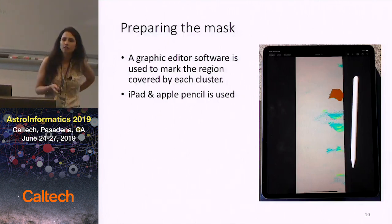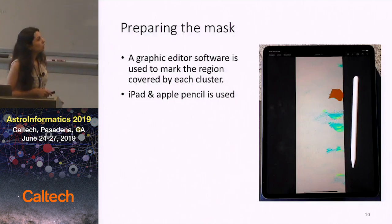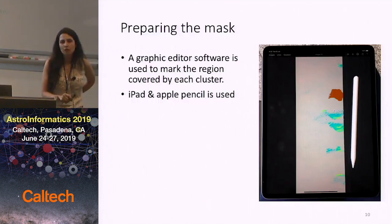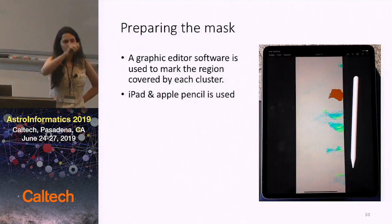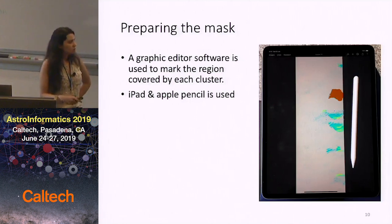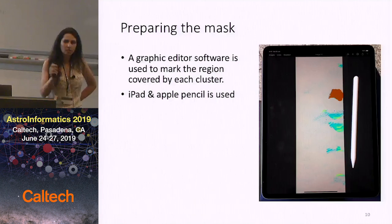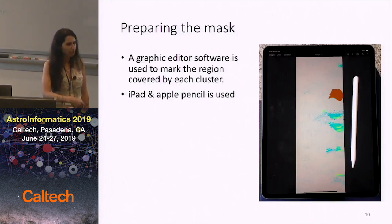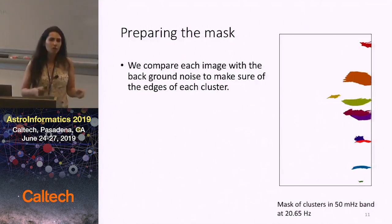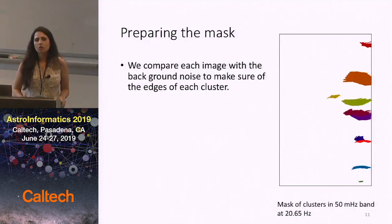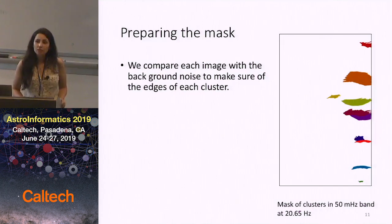Now that we have our training set, we need to label it. Label-maker software tools are not easy to use since you have to click with a mouse to find the outline of each cluster. So we thought that using an iPad with an Apple Pencil, you can more easily trace cluster outlines and create masks. We then use a graphical software to collect the shapes with different colors, and convert them with code into masks readable by the network. If anyone has a better idea or experience with this, I'd be happy to hear.